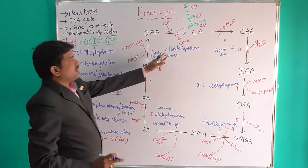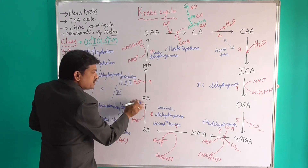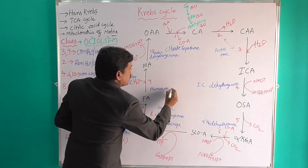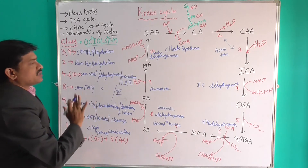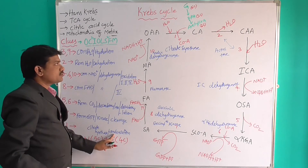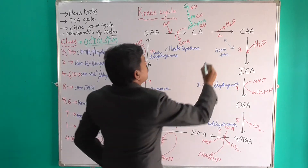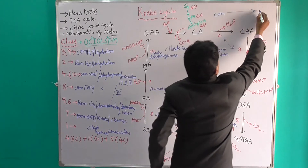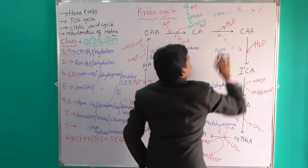Stage 1 uses Citrate Synthase. Stage 9 involves fumarase enzyme. This cycle has 10 stages total. A helpful clue: compounds before reactions are combined; compounds after reactions are formed; and this occurs in the presence of the respective enzyme.